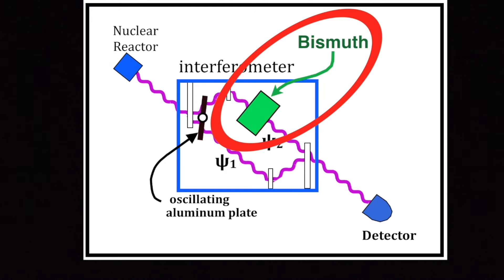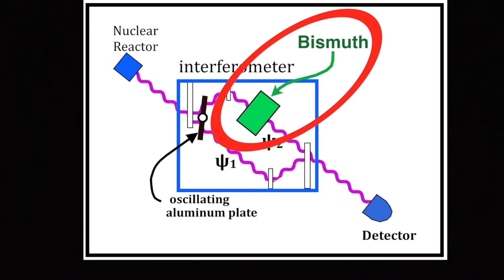Now, bismuth is a metal, the 83rd element, which slows down neutrons and neutron waves. They put a sample of bismuth in the upper beam, ψ2, but not in the lower beam. The size of the sample varied from 0 to 5 millimeters to 10, 15, and 20 millimeters of bismuth.